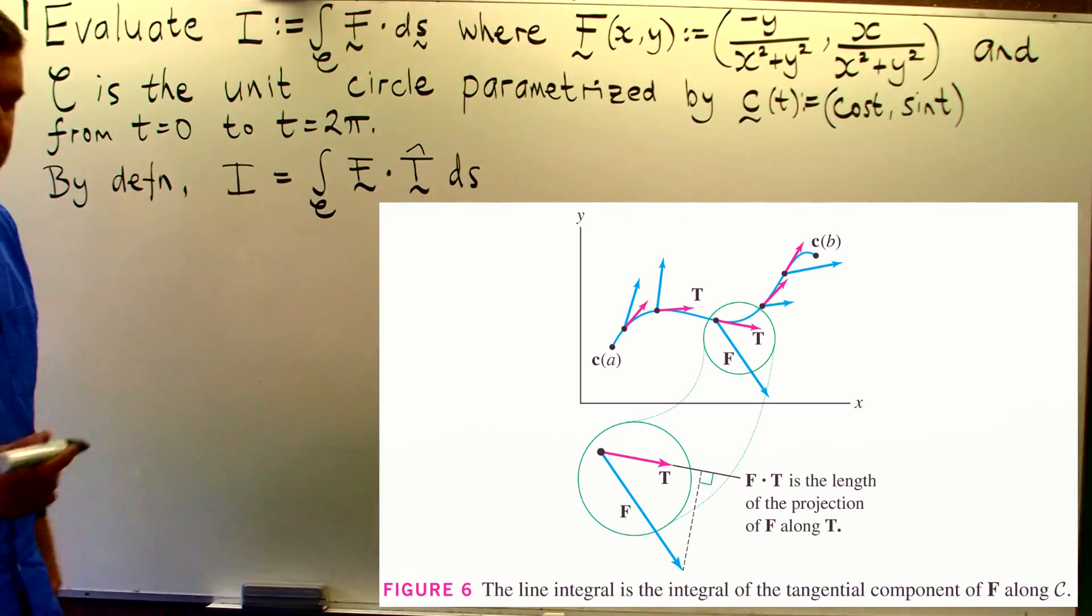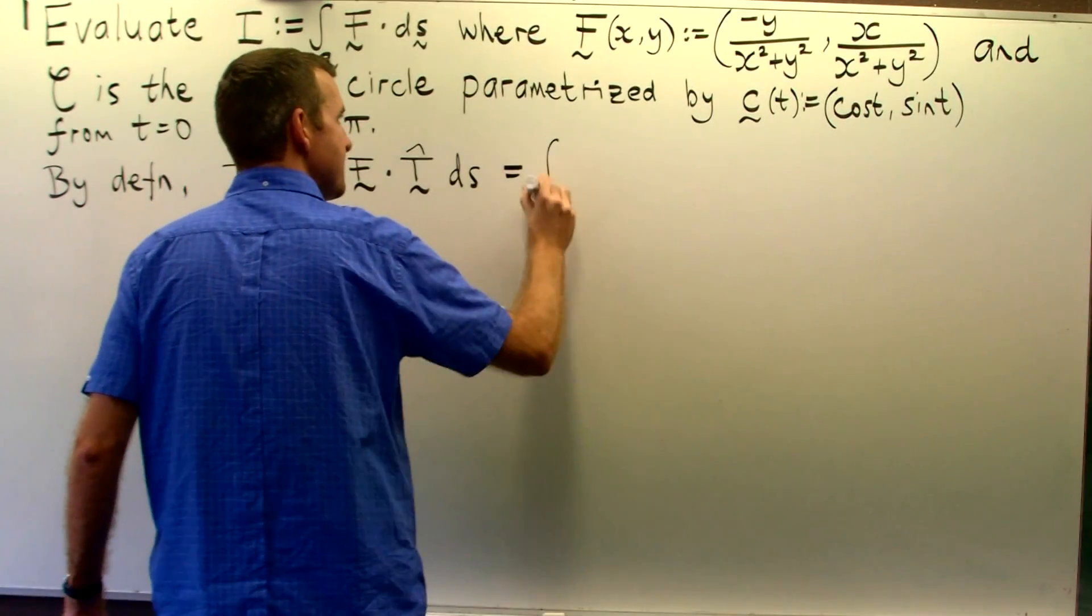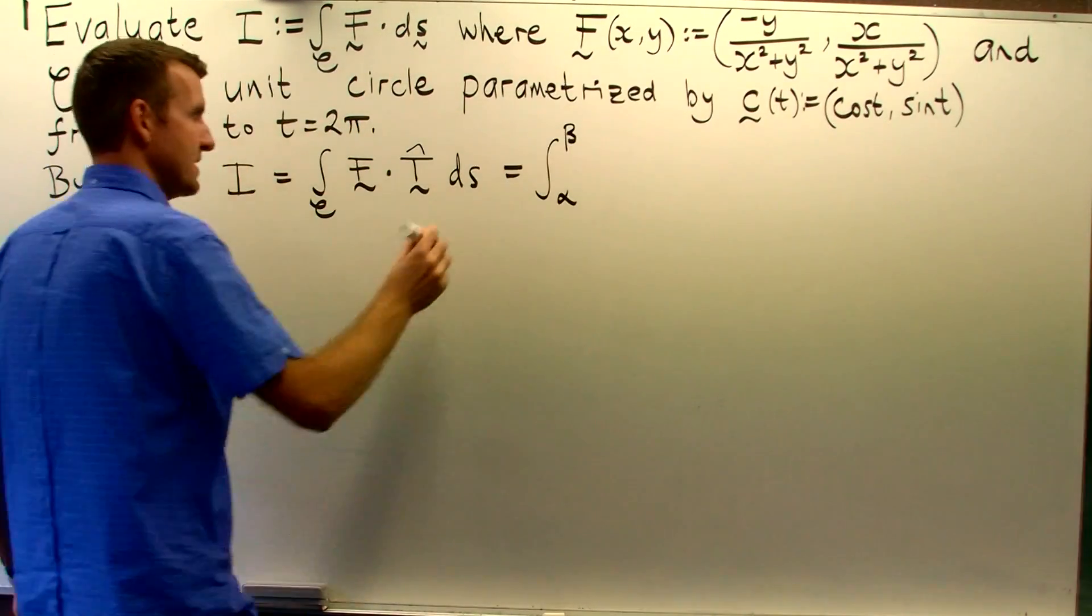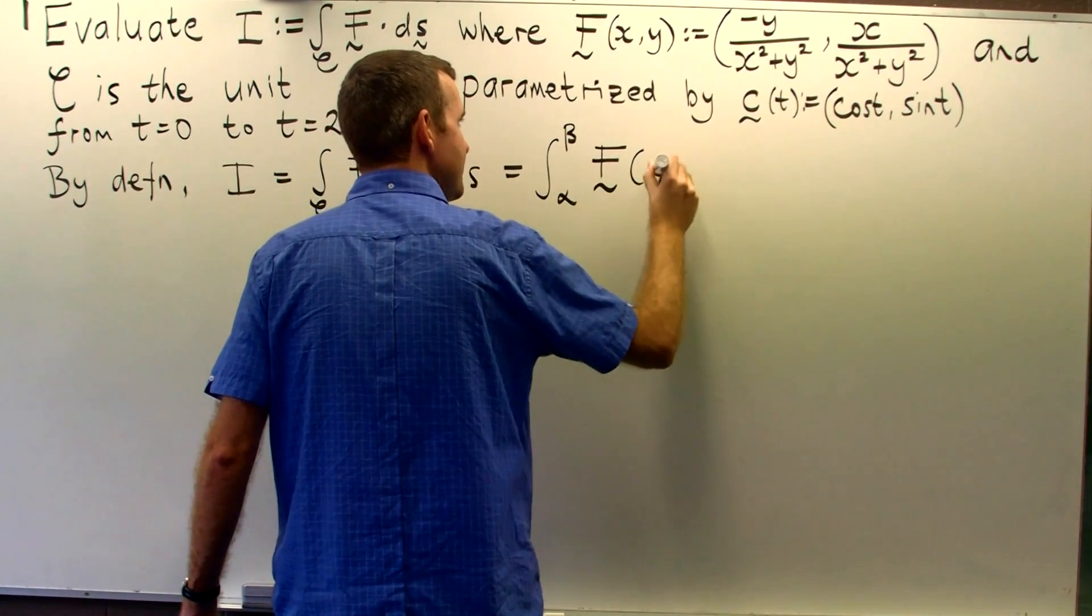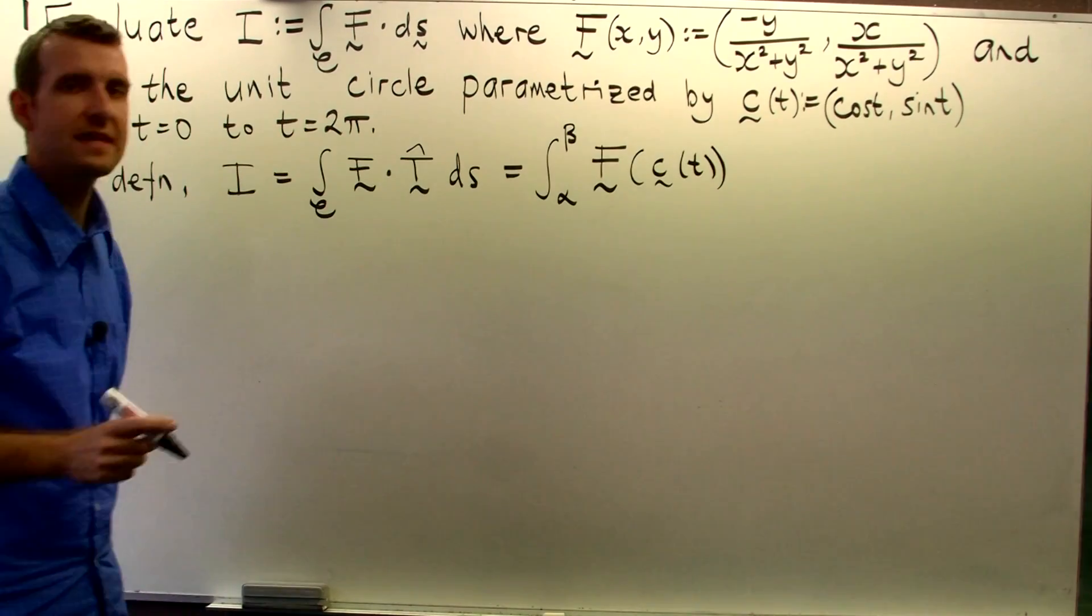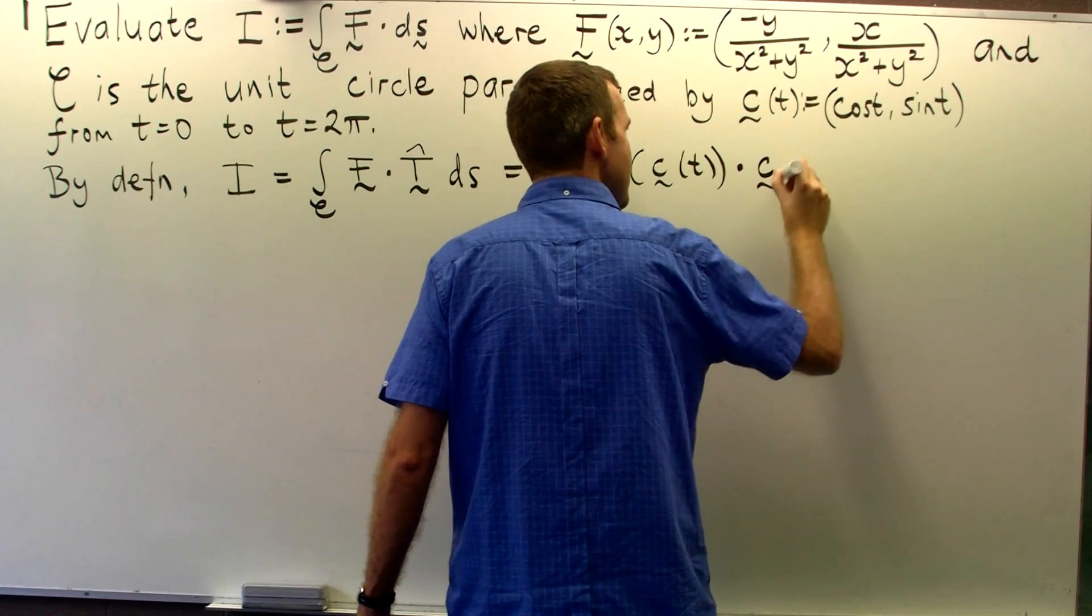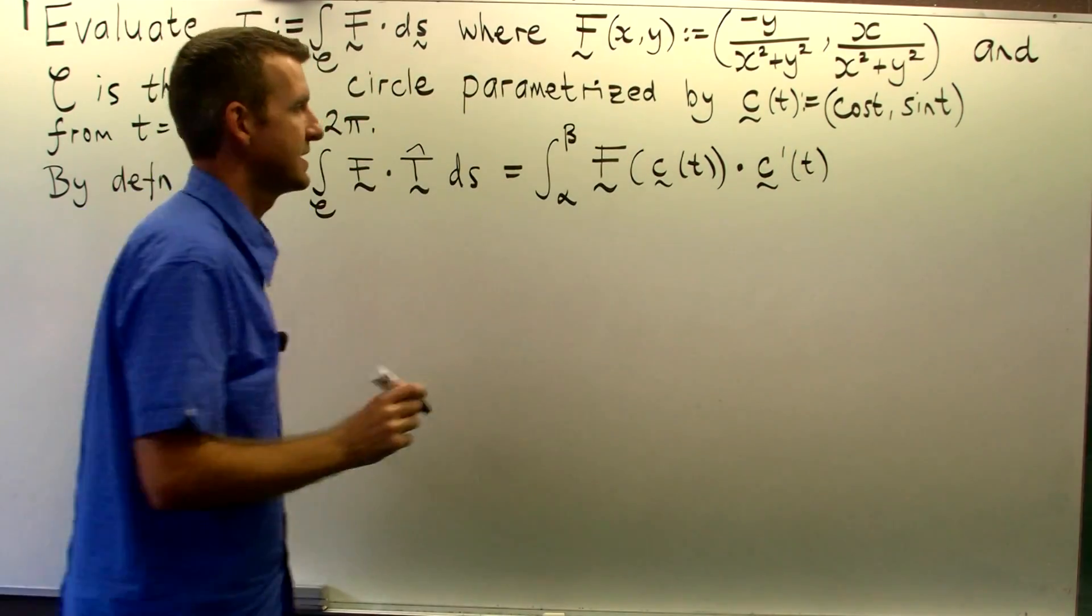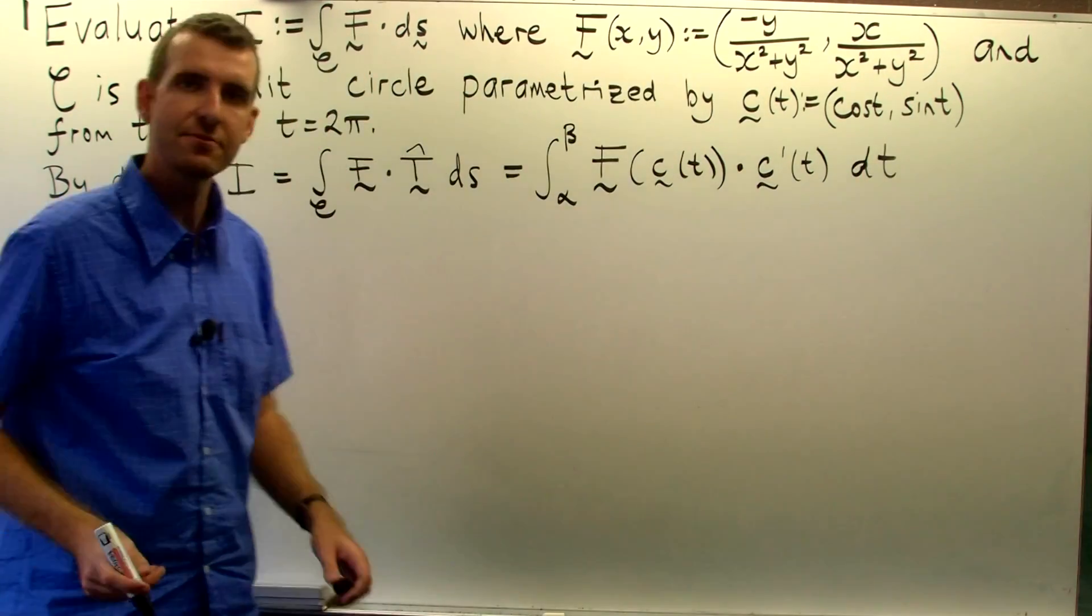Now this looks still a little bit abstract but we can use our parameterization to reduce the problem down to a problem that we know. So essentially we evaluate the vector field along the parameterization, take the dot product with the derivative of the parameterization and just integrate normally with respect to t.